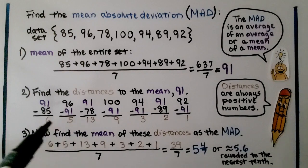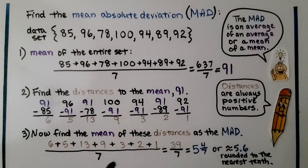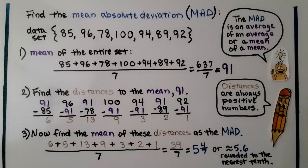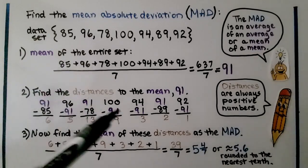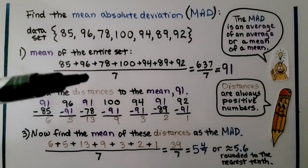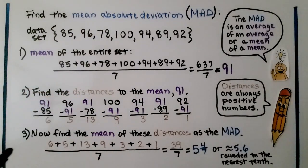Now that we've got these distances, we add them up to find the mean of the distances. They equal 39. We know there are 7 values, so we divide by 7. We get 5 and 4 sevenths, or as a decimal rounded to the nearest tenth, about 5.6. So the MAD is an average of an average — we find the average of the entire set, then the distances between each value and the mean, and then the mean of those distances. That's our MAD.